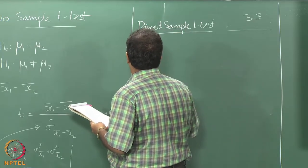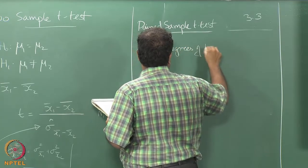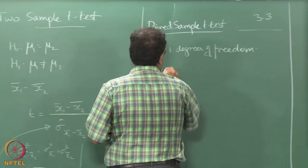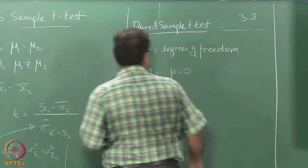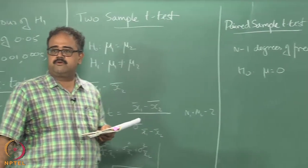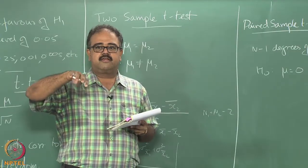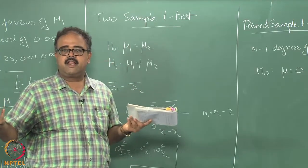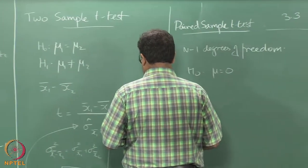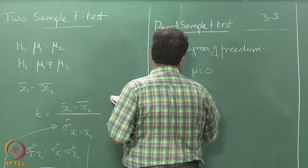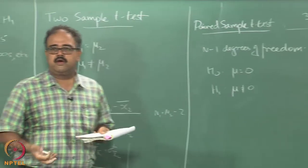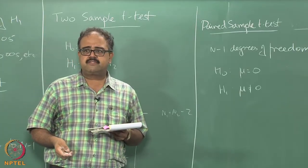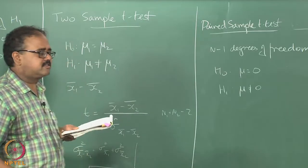This is going to have n minus 1 degrees of freedom. My H0 is that mu — the mean of the difference of the performance — is 0 across many samples, meaning they are the same. That is my null hypothesis. Alternatively I can do mu greater than 0, which depends on which one I am subtracting: if it is x1 minus x2, mu greater than 0 means x1 is better than x2, but there should be something from the data that supports the alternate hypothesis.